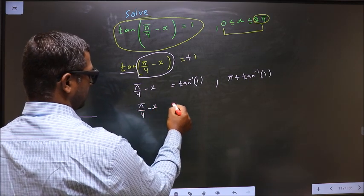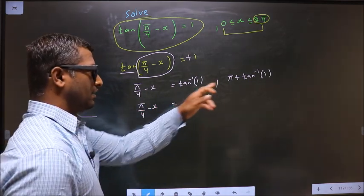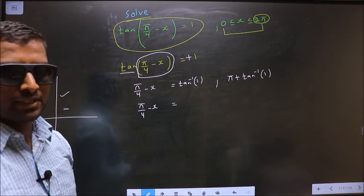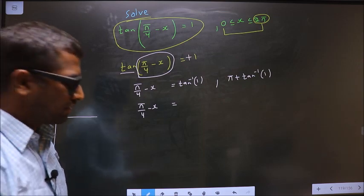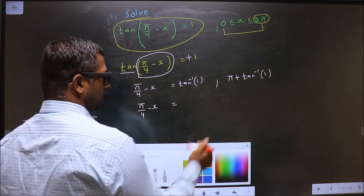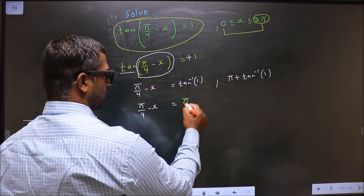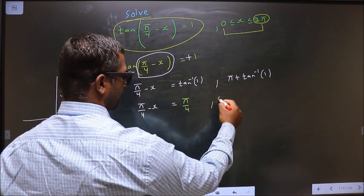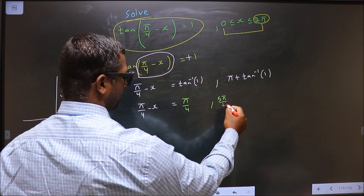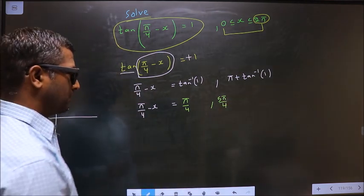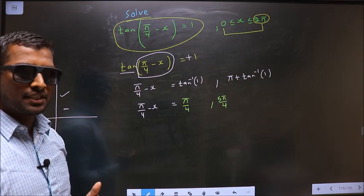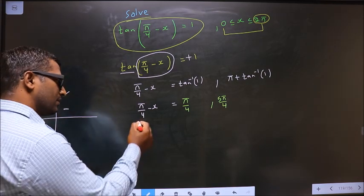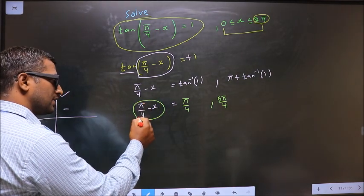Now calculate: π/4 - x = tan⁻¹(1). Make sure your calculator is in radians mode before you calculate. When you calculate tan⁻¹(1) you get π/4. So the first value is π/4, and the second value using the third quadrant formula is π + π/4 = 5π/4.